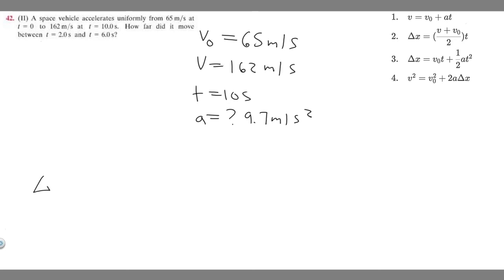Delta x equals v sub zero which is 65 times t. Keep in mind the acceleration is constant over this interval, so it's going to be the same throughout. Between 2 and 6 seconds, all we do is subtract. Take your 6 seconds and plug in your other second. So 65 times 6 minus 2, plus one half times acceleration 9.7 times t squared.